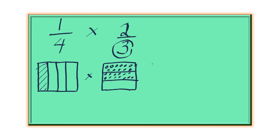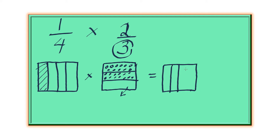What we're going to do next is overlay this second square on top of the first square. We're going to visualize having those two squares together in just one diagram. So we can draw the first one again and divide it into 4 sections — that's the 1 fourth. And then we overlay the second square, divided into 3 parts, with 2 sections shaded.